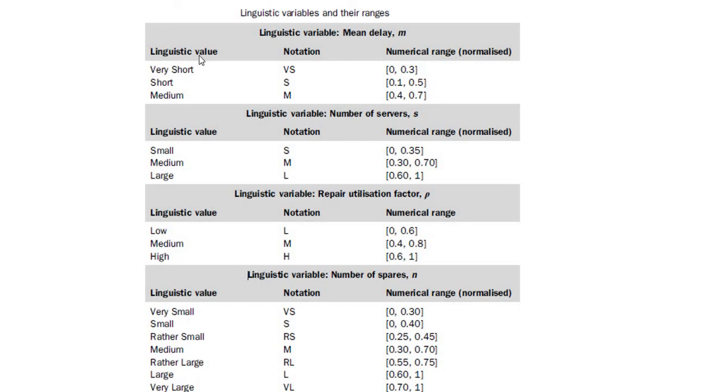This is an example of linguistic variables and their range. You have linguistic value, notation, and numerical range in normalized form. If you have very short, short and medium, you can represent it as VS, S and M. Very short is 0 to 0.3, short between 0.1 and 0.5, medium between 0.4 and 0.7. There is overlapping between 0.3 and 0.1, 0.5 and 0.4. If it's not overlapping, it is not a fuzzy system.